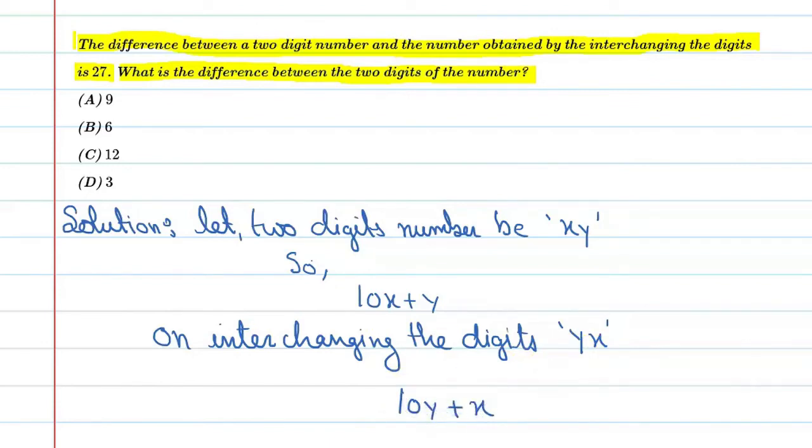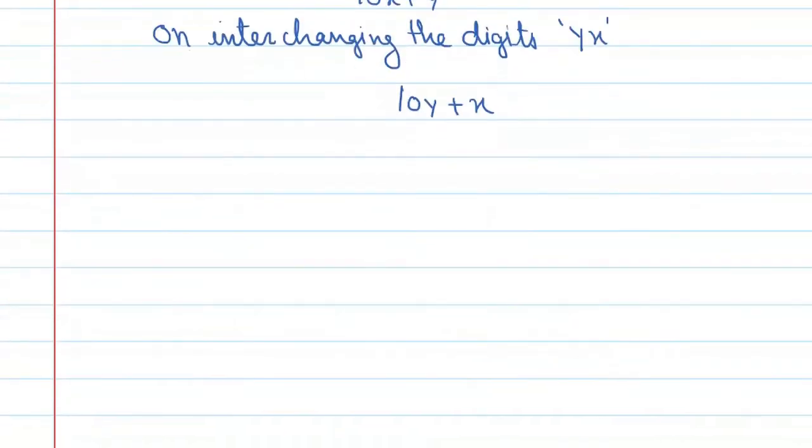Now, what is the condition of the question? According to question, 10x plus y minus 10y plus x is equal to 27. If you solve it then you will get 10x plus y minus 10y minus x equal to 27.